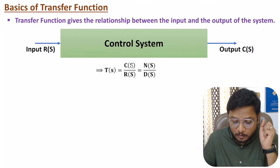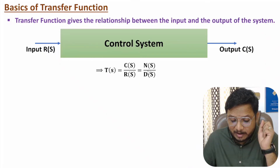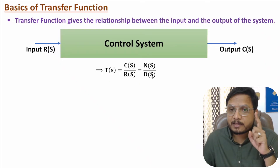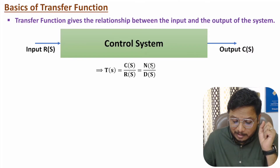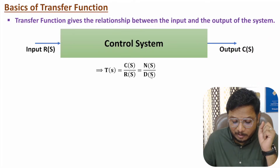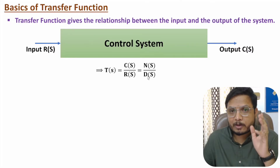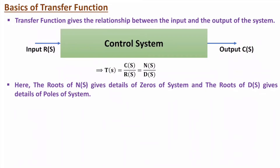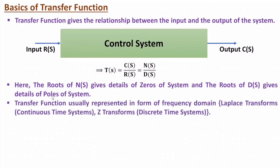Transfer function is a ratio of output to input, represented in the frequency domain. It can also be represented by numerator polynomial N(s) divided by denominator polynomial D(s). Roots of the numerator polynomial give you the zeros of the transfer function, and roots of the denominator polynomial give the poles of the system.